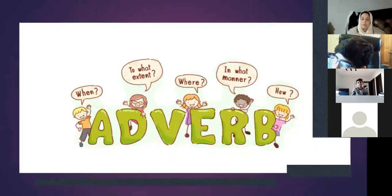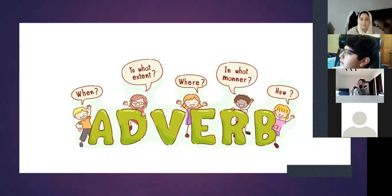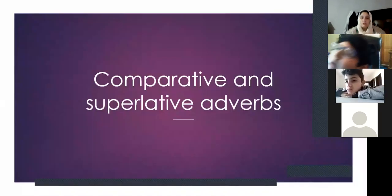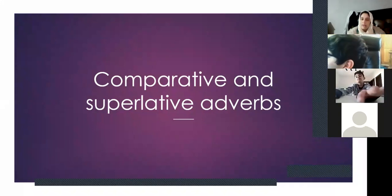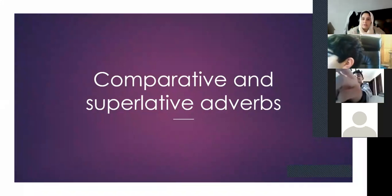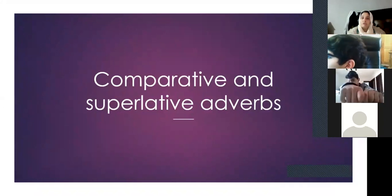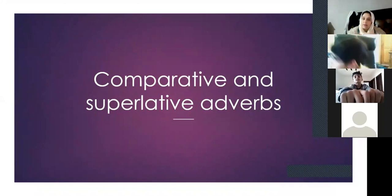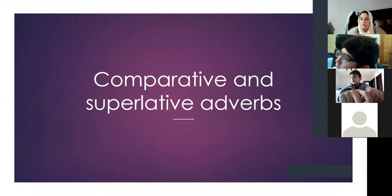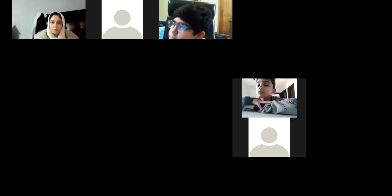The topic is comparative and superlative adverbs. I've explained what adverbs are; now let's talk about comparative and superlative adverbs. Just as with comparative and superlative adjectives in our previous classes — when comparing only two things or two actions we use the comparative form, and when comparing three or more we use the superlative.